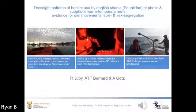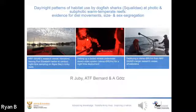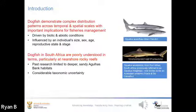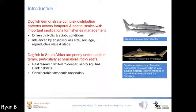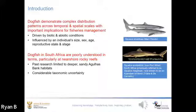Up next is Roxanne, who is an MSc student. Hi there, my name is Roxanne Juby and I'm sharing my research on dogfish distribution patterns at Algoa Bay's rocky reefs. Dogfish demonstrate complex distribution patterns across temporal and spatial scales, and these have important implications for fisheries management. Dogfish in South Africa are poorly understood, particularly at near-shore rocky reefs, because past research largely used trawling surveys and there is still considerable taxonomic uncertainty about species composition in the region. For this study, we only identified individuals down to genus level.